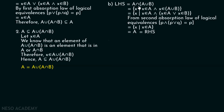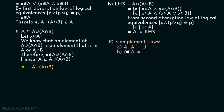Last but not the least, we will discuss complement laws. We have two laws under this category. First: A union A complement is equal to the universal set. Second: A intersection A complement is equal to phi. Let us prove them one by one. First, we will prove A union A complement is equal to the universal set.